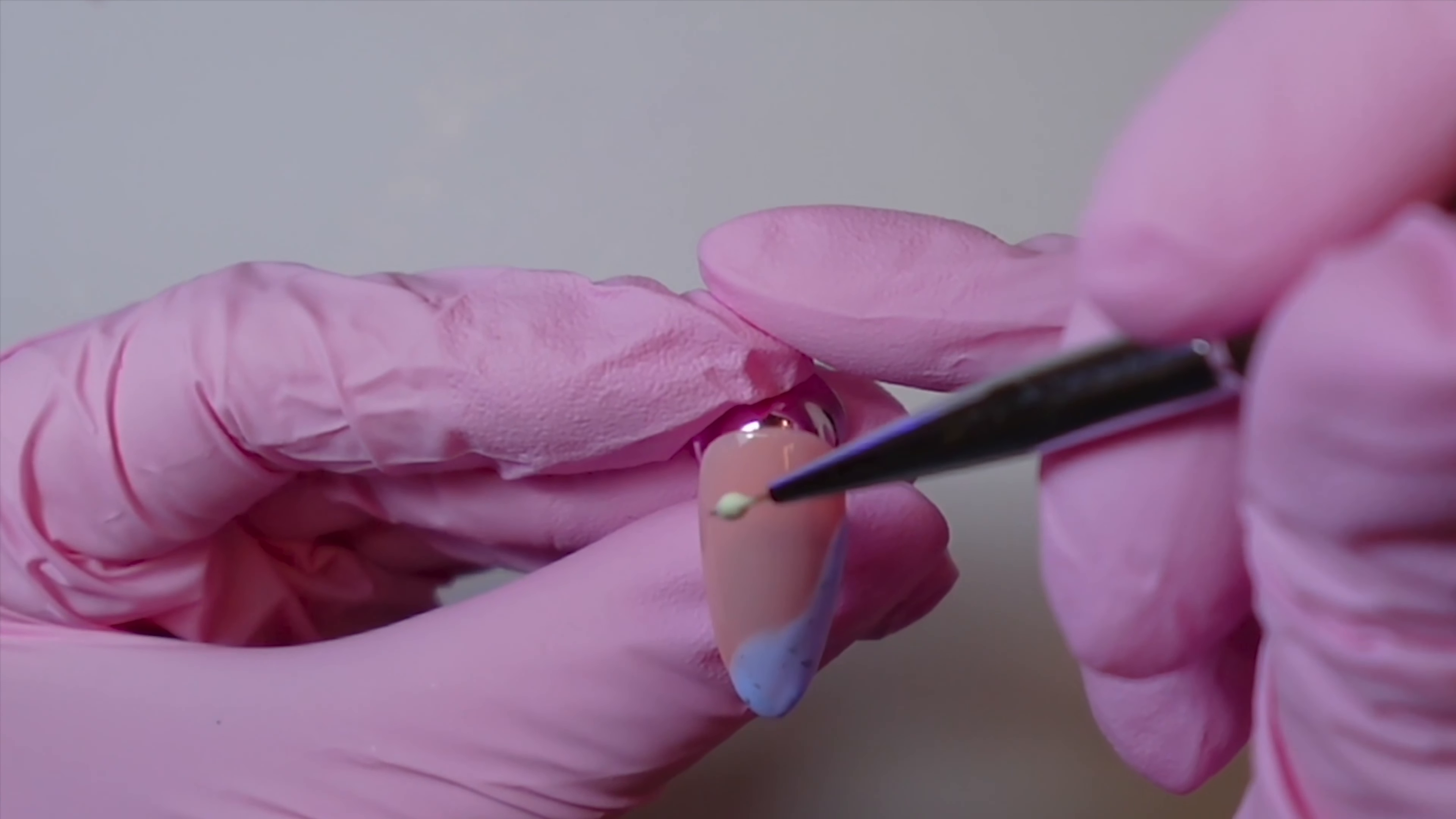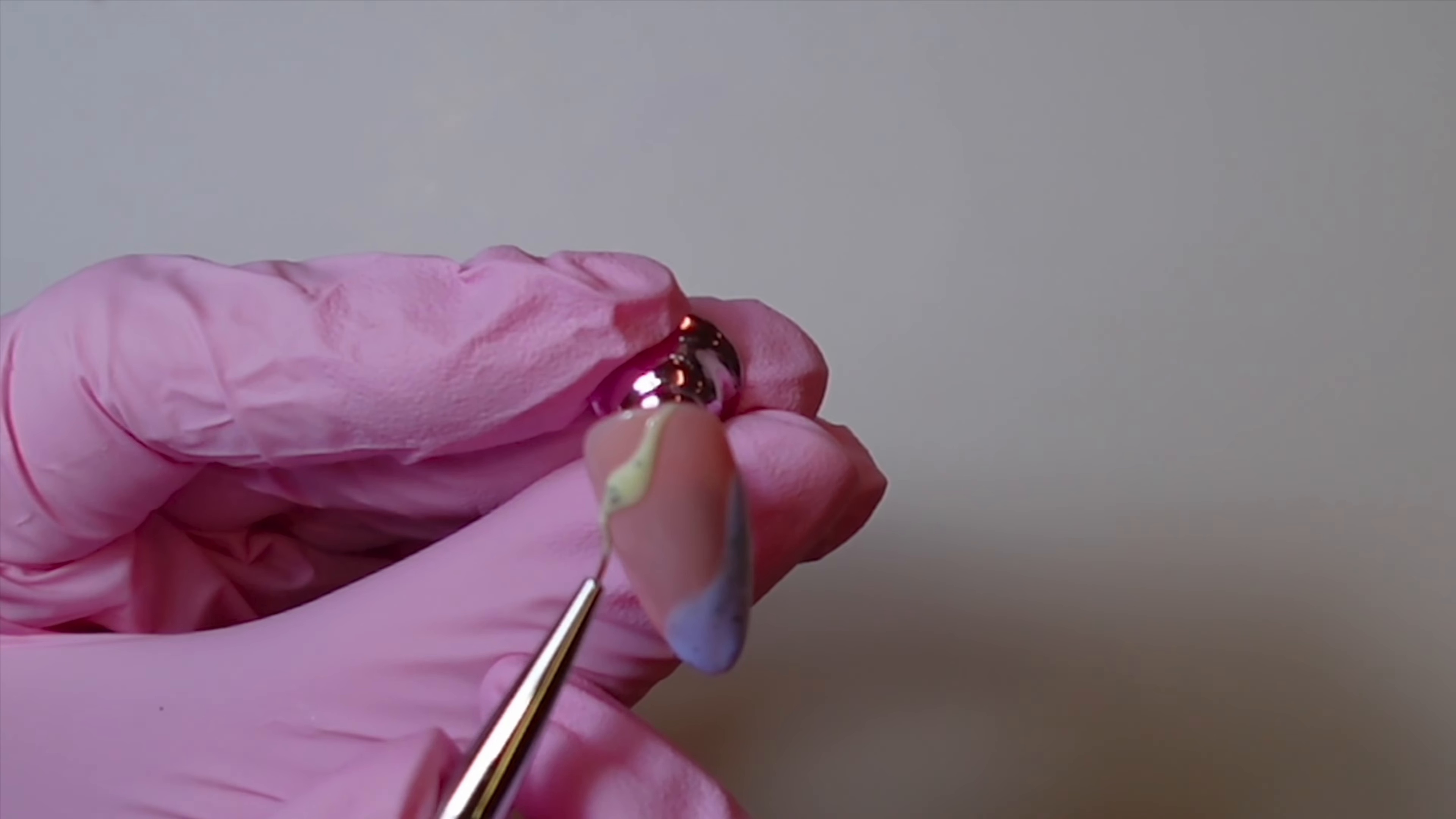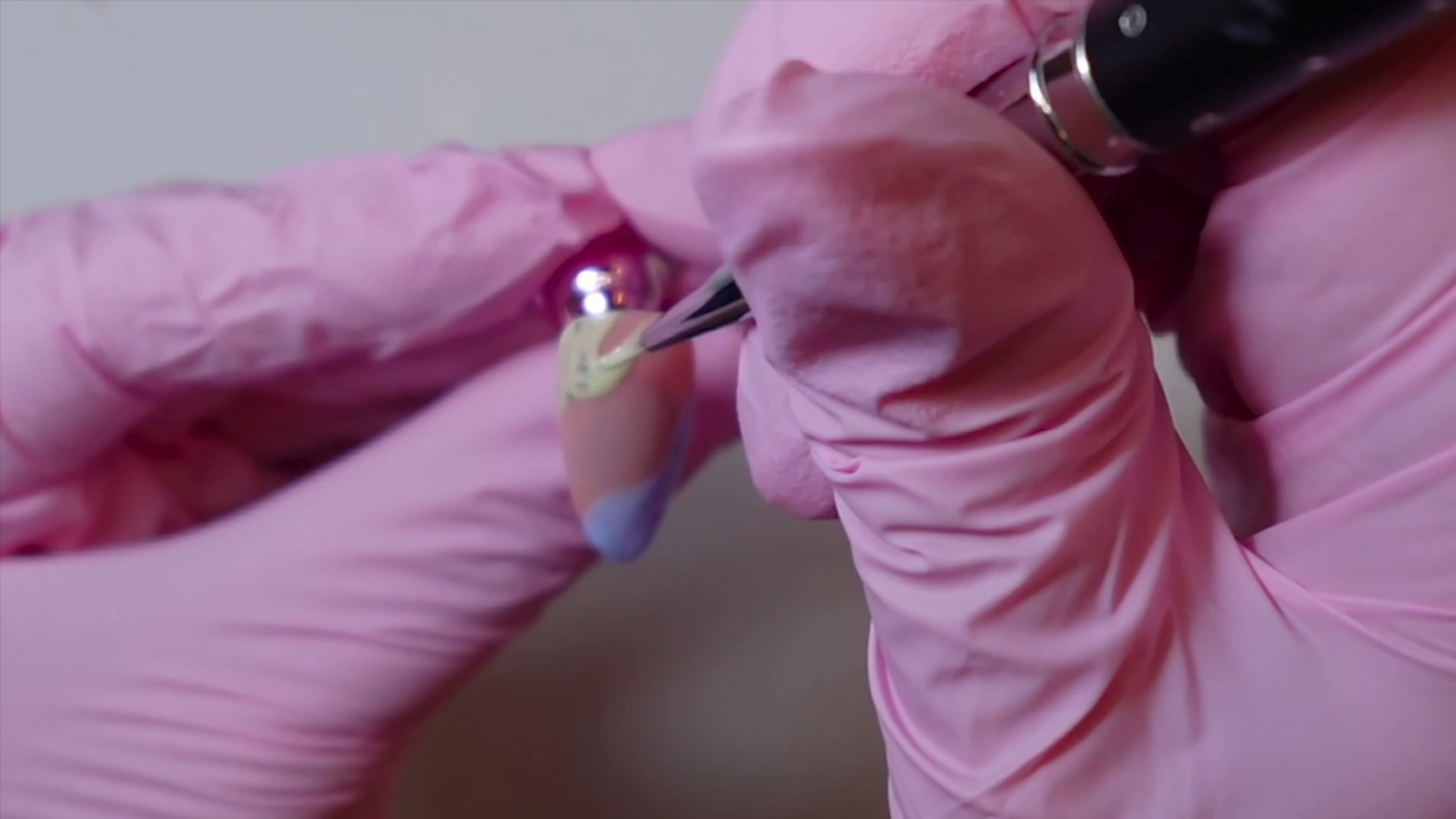I'm going to pop that in and cure, and then I'm going to do my swirly line across the base of the nail, leaving that lovely nude patch in the middle. Again, just a swirl, no set pattern. Although, I would try and match up—unless you're doing every nail different—I'd try and match up the equivalent fingers on each hand with a similar shape and design.